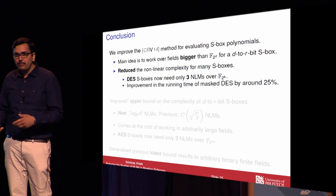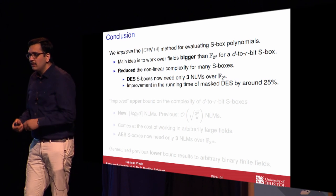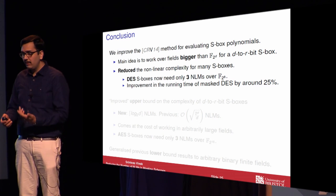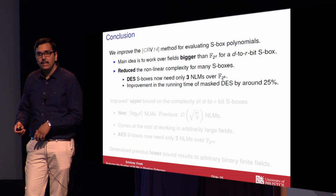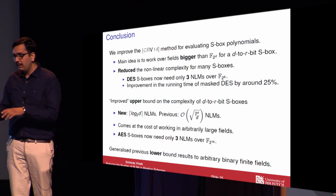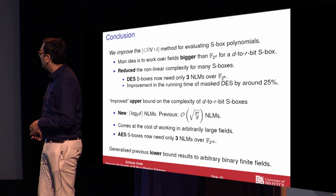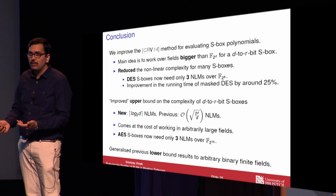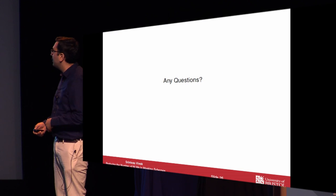To conclude: the main contribution is to improve the CRV method to evaluate polynomials corresponding to S-boxes under the non-linear multiplicative complexity cost model. The main idea is to work over bigger fields than strictly necessary, which leads to a reduction in the number of non-linear multiplications for many S-boxes. In particular, DES now needs only three non-linear multiplications instead of four over F2 power 6, and we get an overall improvement in running time of about 25%. On the theoretical side, we improve the upper bound to logarithm of D non-linear multiplications for any D-to-R bit S-box, though at the cost of working over arbitrarily large fields. As an application, AES needs only three non-linear multiplications over F2 power 16. We also generalized the previous lower bound results to arbitrary binary finite fields. Thanks for your attention.